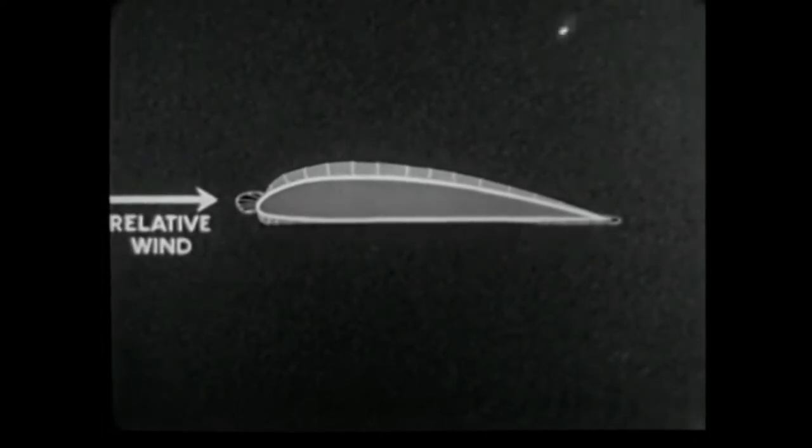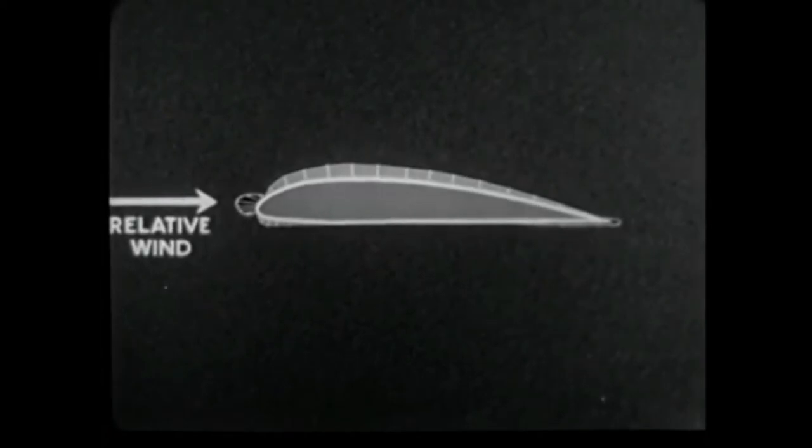At zero degrees, there is a small bulb of positive pressure directly upon the leading edge of the wing. Another area of positive pressure encloses the trailing edge and extends forward about one-quarter cord length along the lower surface. Elsewhere, the pressures are negative.